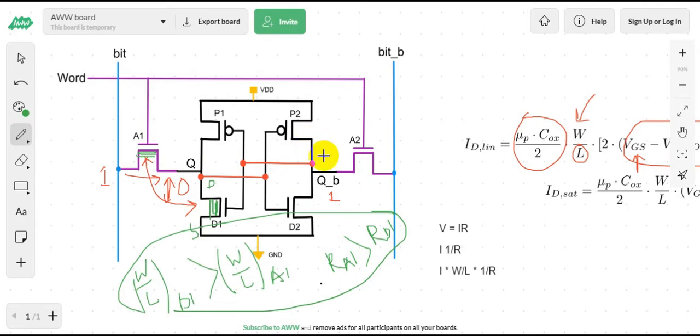For write operation, you know that this X transistor must be stronger than this P2 transistor, because if we want to write 1 here, we need to make the Q bar go from 1 to 0.